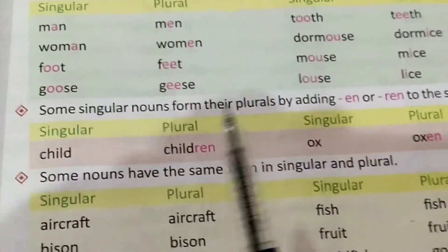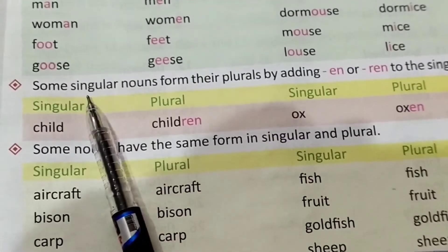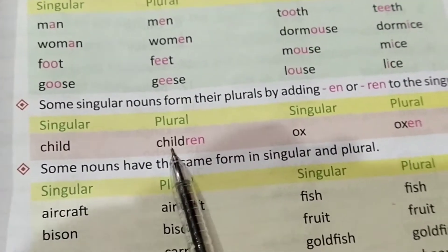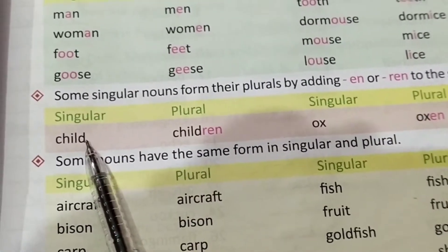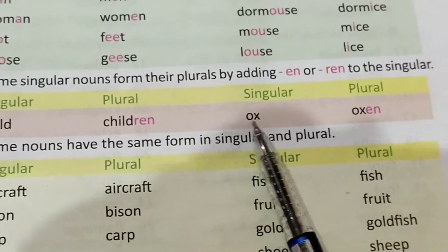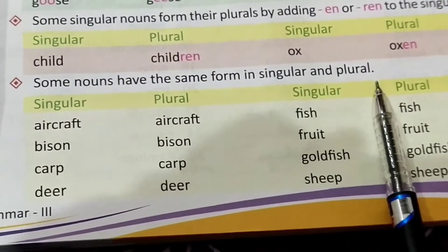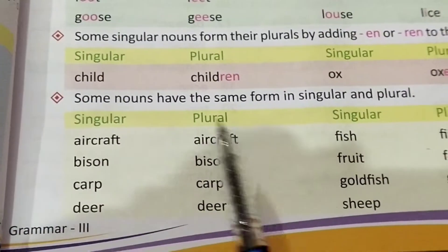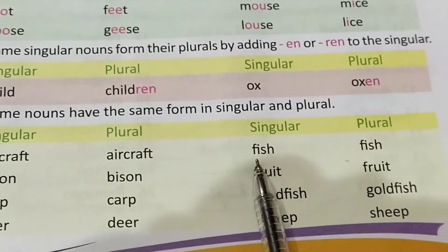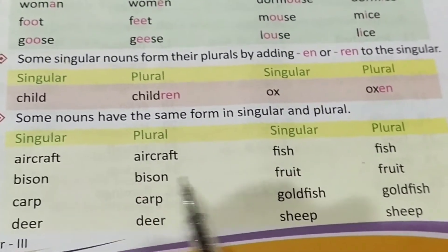Some singular nouns form their plural by adding -en or -ren. For example: child → children. Don't say 'childs' — children itself is the plural, formed by adding -ren. Ox → oxen. Some nouns have the same form in singular and plural: aircraft, fish, fruit, carp, deer — these do not change.